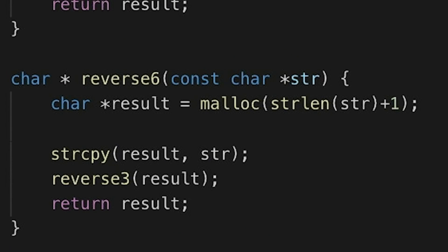Moving on to number 6. Number 6 is a hybrid. It's a solution for those of you who don't want to harm the original string, but you already have a perfectly good in-place reverse function like reverse3, so you simply malloc a new string, copy the original over, and then call reverse3, or any of our other in-place reverse functions, and return the new reverse string.